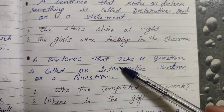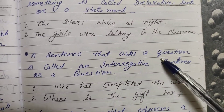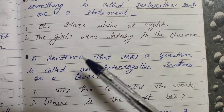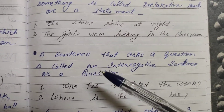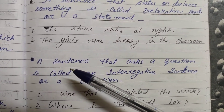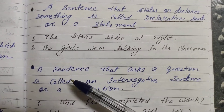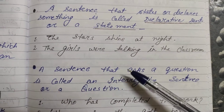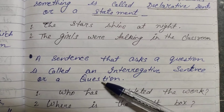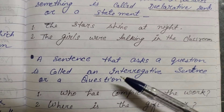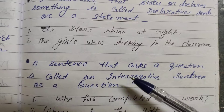Now we come to another one — that is the interrogative sentence, or a question. Interrogative yaani ki jisme hum question poochte hain. A sentence that asks a question is called an interrogative sentence. Koi aisa sentence jisme question poocha ja raha hota hai.